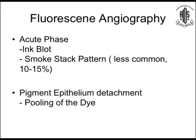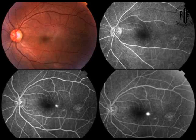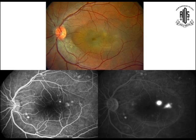Regarding fluorescein angiography: the acute phase shows inkblot and smokestack patterns. The smokestack pattern is less common. Pigment epithelium detachment shows pooling of the dye. On the right-hand side, the upper photograph shows a small inkblot dot point, and the lower photograph shows central serous chorioretinopathy with fibrin, and two leaking points — both are inkblot pattern.